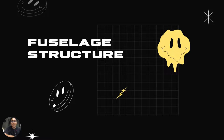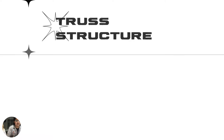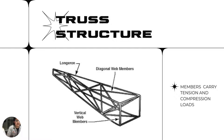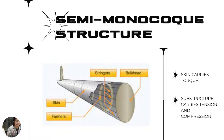Fuselage structure has three types: truss structure, semi-monocoque structure, and monocoque structure. Truss structure uses members to carry tension and compression load. Semi-monocoque structure uses skin to carry torque in shear flow form and uses substructure to carry tension and compression in the form of bending stress.